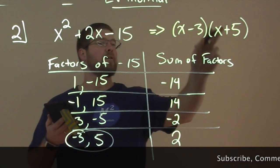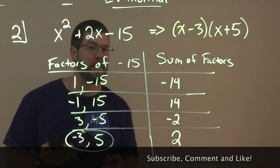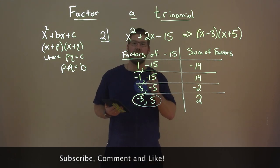If we multiply them together, FOIL it out, we would get x squared plus 2x minus 15. So now you know how to factor a trinomial with a leading coefficient of 1.